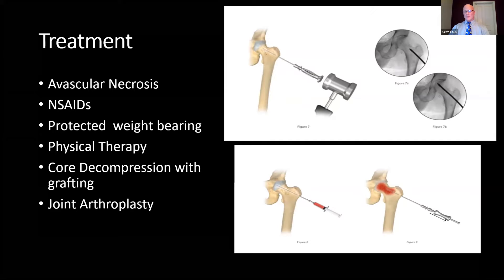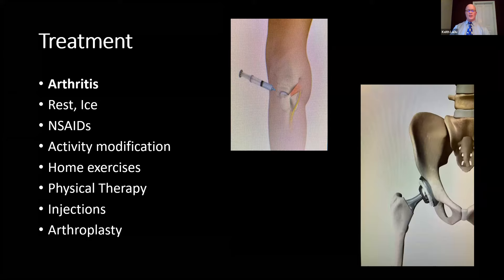If there is collapse, then you get into a joint arthroplasty. For arthritis, treatment includes rest, ice, NSAIDs, activity modification, home exercises, physical therapy, corticosteroid injections, and ultimately total hip arthroplasty.